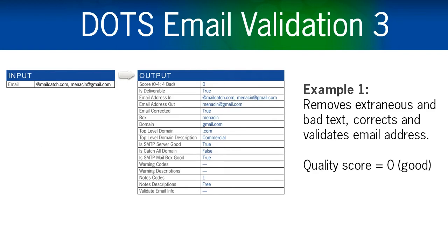Let's take a look at this first example. The inputted email address is on the left. On the right side you can see the output fields and flags. The API has removed extraneous and bad text and has corrected and validated the final address. A quality score of 0 has been assigned to this address, denoting that this is a valid email and should be kept.